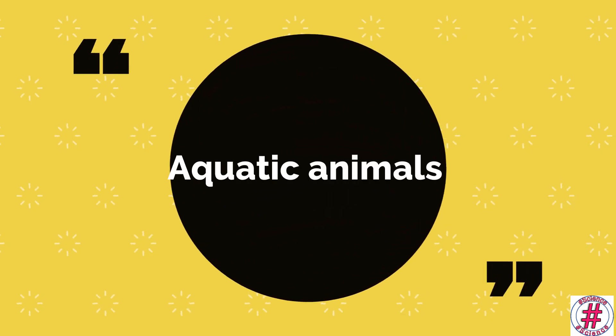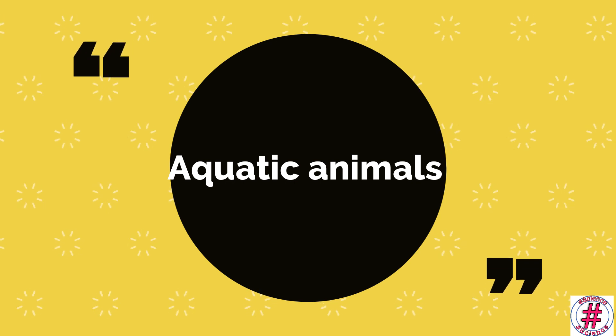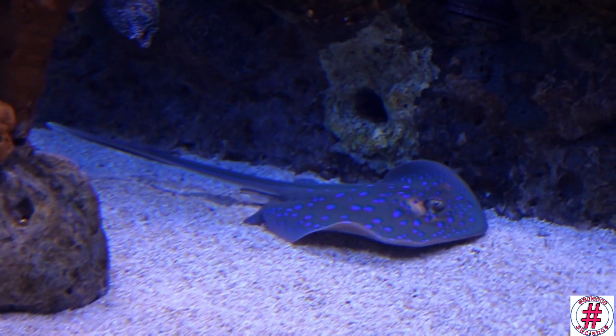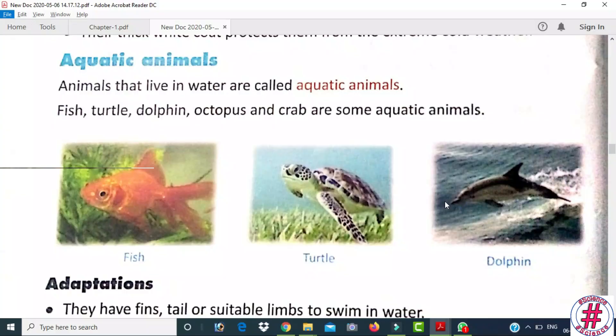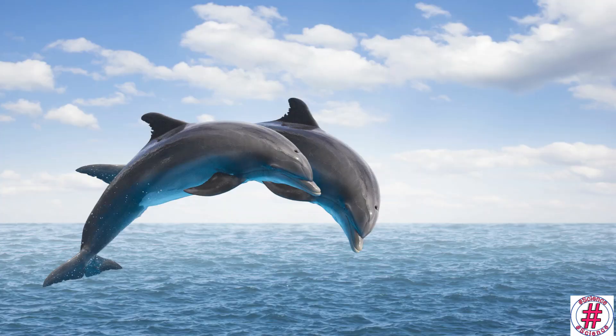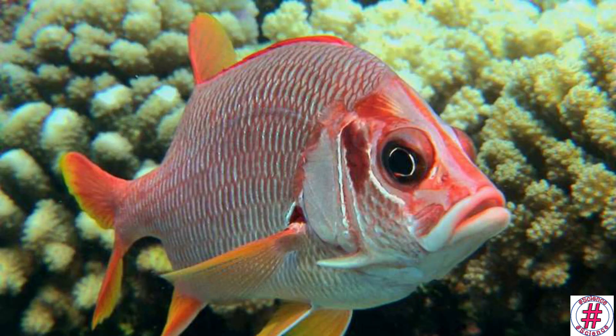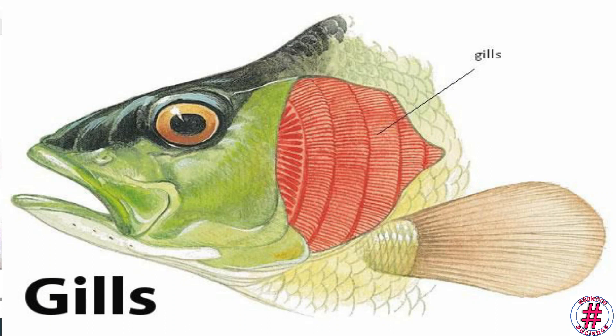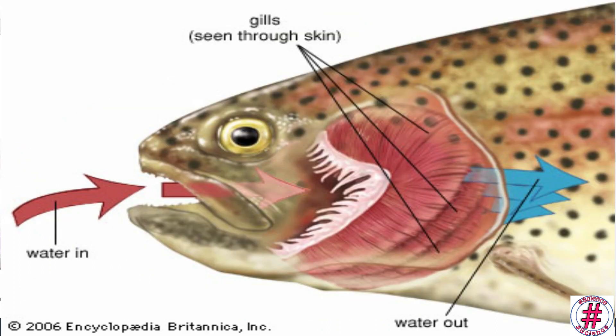Aquatic animals: animals that live in water are called aquatic animals. Fish, turtles, dolphins, octopuses, and crabs are some aquatic animals. Their adaptations include fins, tails, or suitable limbs to swim in water. They have gills through which they breathe in oxygen dissolved in water.